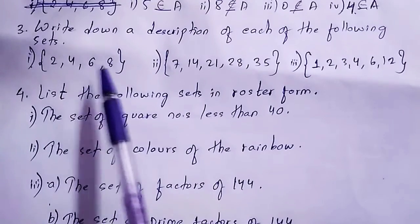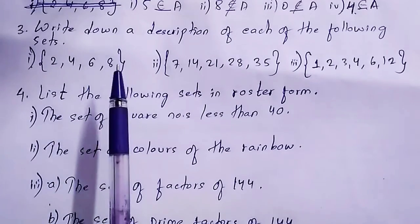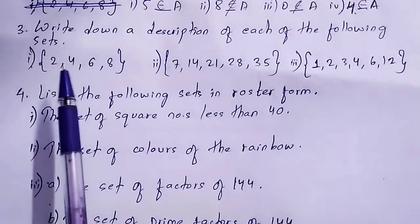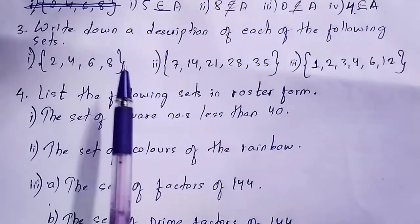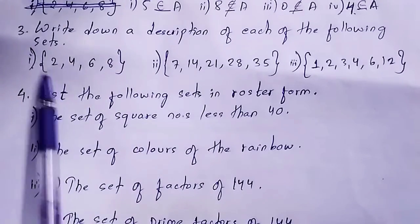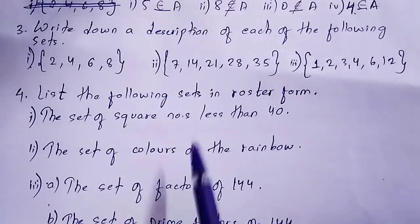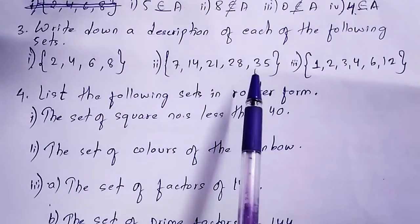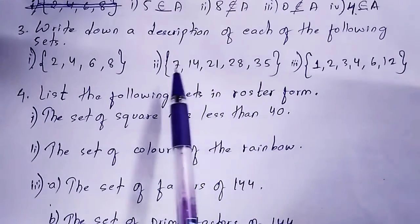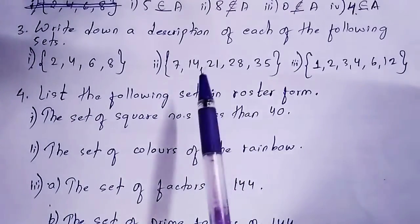Question 3: Write down a description of each of the following sets. The first set contains 2, 4, 6, and 8 — these are all even numbers, so you write: even numbers between 1 and 9. The second set has 7, 14, 21, 28, 35 — these are multiples of 7, so you write: multiples of 7.